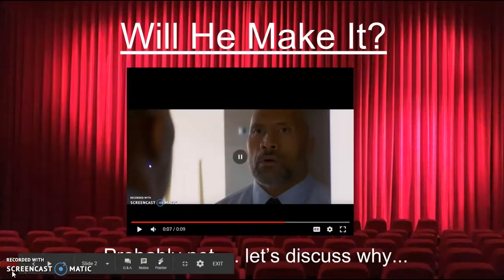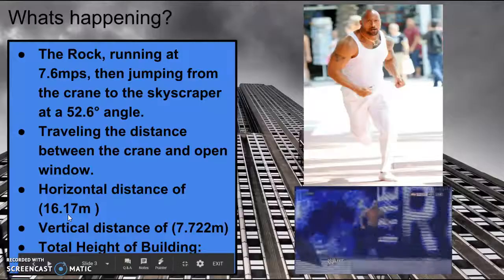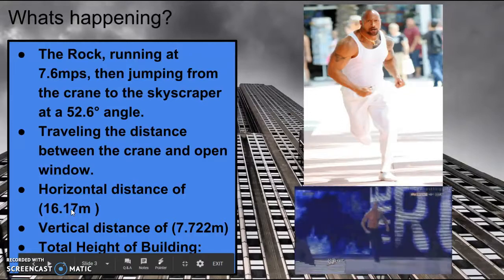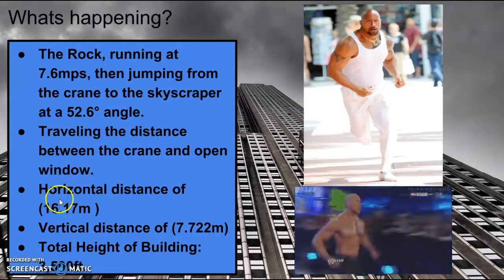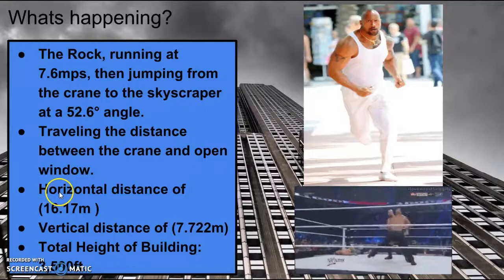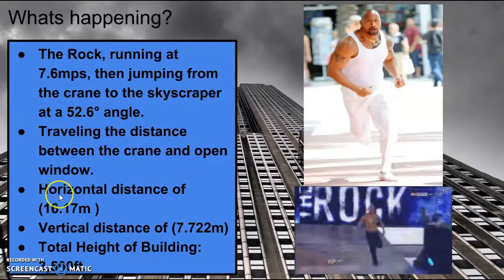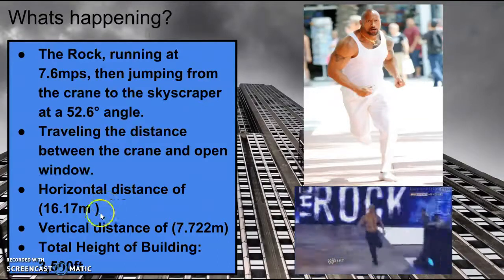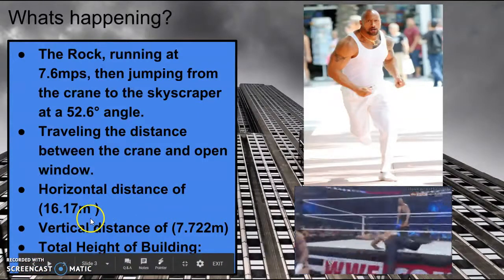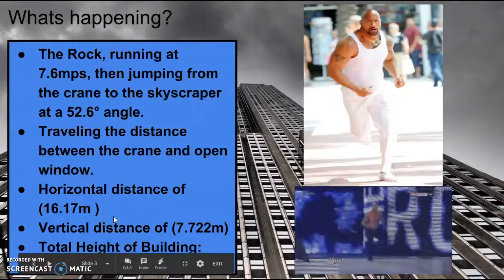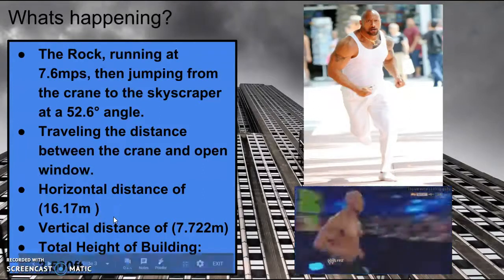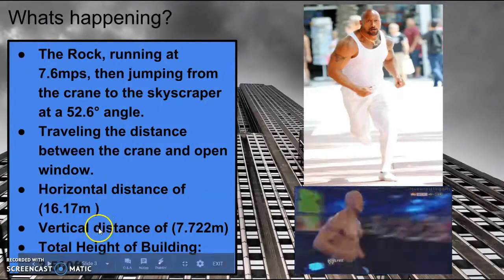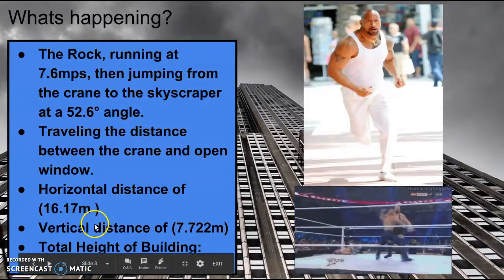Let's talk about why. In this scene, we see The Rock jumping from a crane to a skyscraper at what we expect to be 7.6 meters per second at an angle of about 52.6 degrees. We have calculated a horizontal distance of 16.17 meters and a vertical distance of 7.722 meters. This is about from the top of one floor to the bottom of the floor below that.